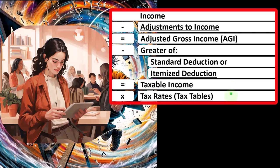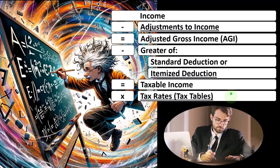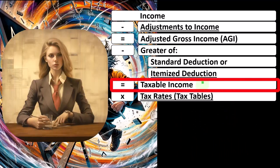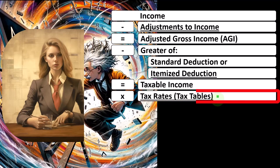Oftentimes we rely on the tax return or tax software to do the actual tax calculation, which is fine. But we probably also want a conceptual understanding of what the tax return is doing so we can communicate it to others, catch any errors, and plan going forward. For data input into the software, we're basically going to double-check the taxable income and rely on the software for the tax calculation. Also note this is not accounting for a double-entry accounting system — there's no balance sheet here.